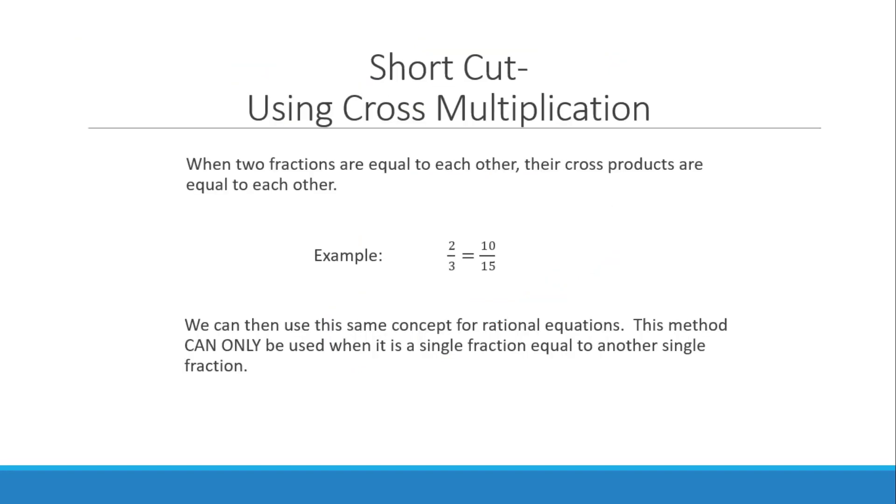Now if you just have a single fraction equal to another single fraction, you can use essentially a shortcut method of cross multiplication. So if you remember what cross multiplication means, that means multiplying the two that are diagonal across from each other and then setting them equal to each other. So in this case, 30 is equal to 30.